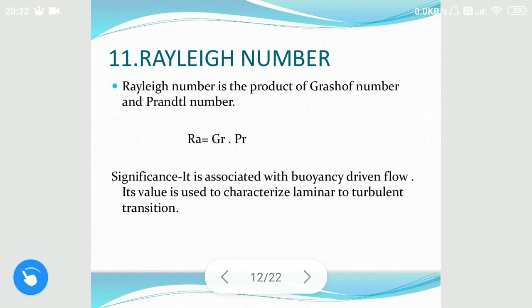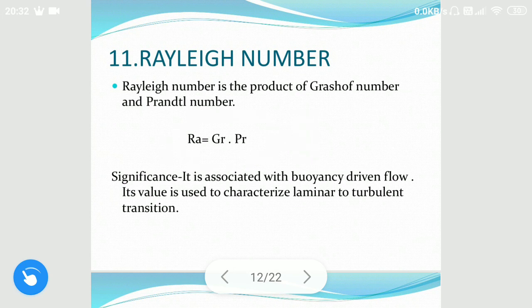The Rayleigh number is one of the dimensionless numbers derived from the numbers already discussed. It is a multiplication of the Grashof number and the Prandtl number. Rayleigh number is helpful in determining the type of convection — whether it is free convection or forced convection. If the Rayleigh number is more than 10⁹, it is forced convection; otherwise it is free convection.